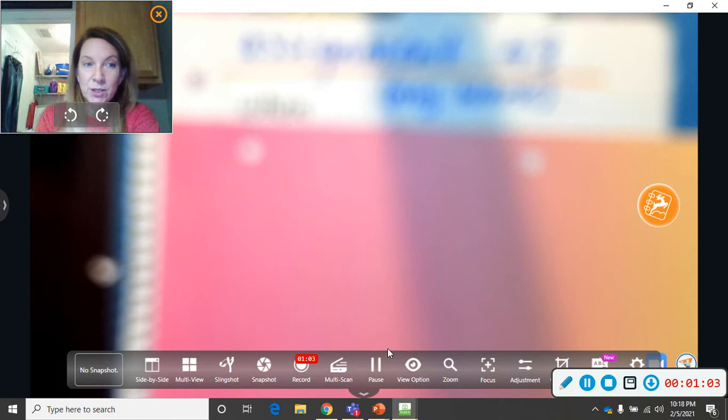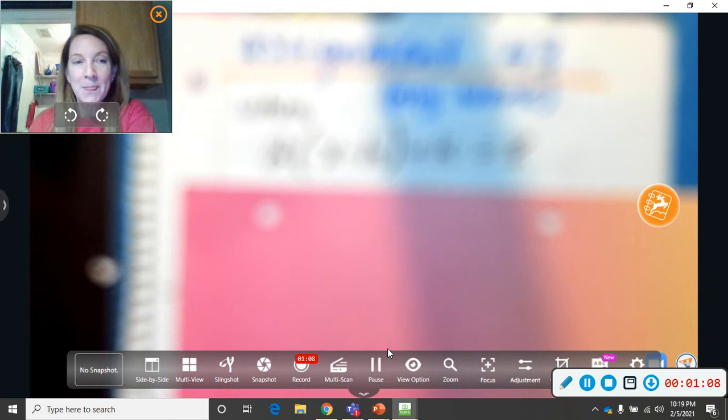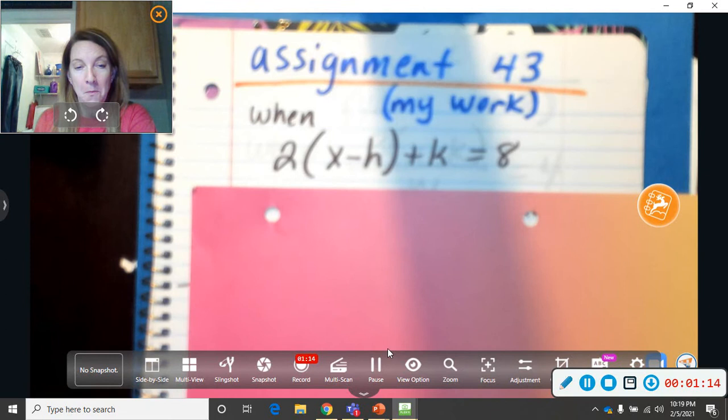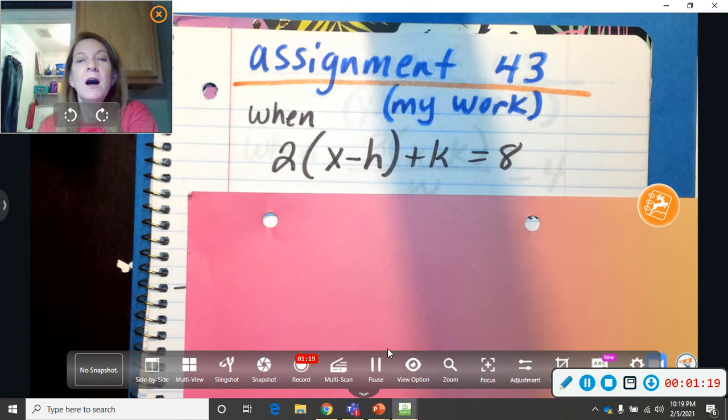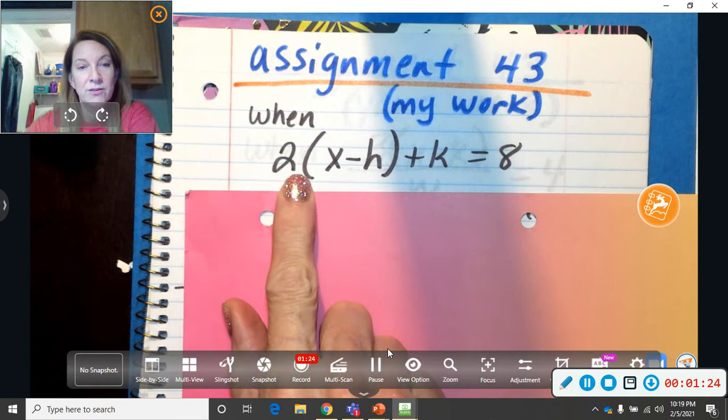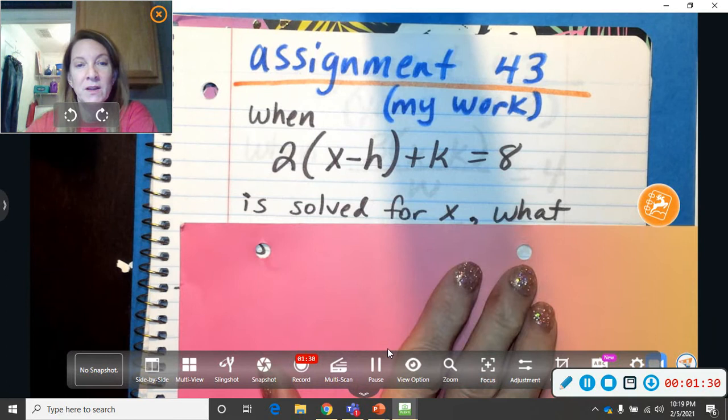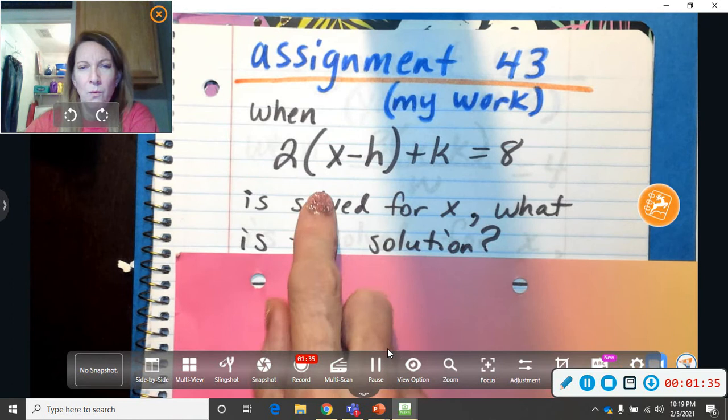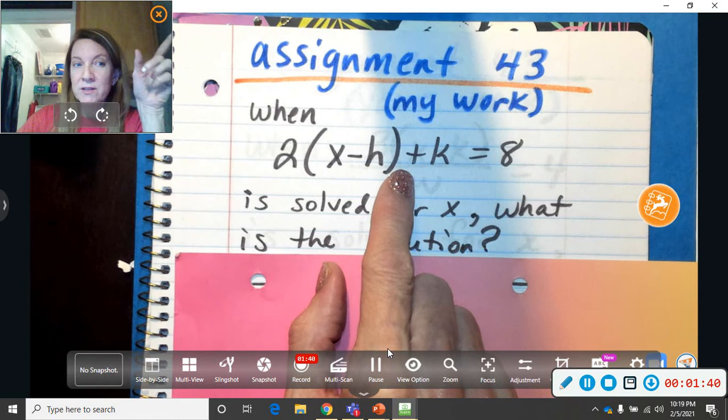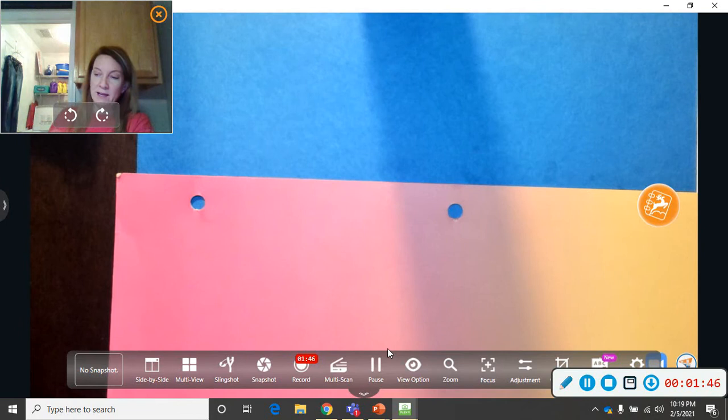So here's my problem. When two times x minus h plus k equals eight, when it's solved for x, what is the solution? So you're like, wow, there's an x, an h, and a k. How am I going to work that in a calculator? Remember, this is one of those trick ones where you're not really solving it. You're solving it as if it were numbers.